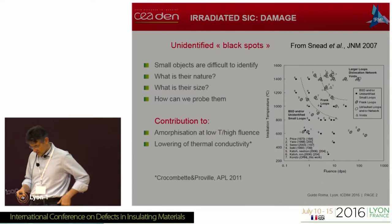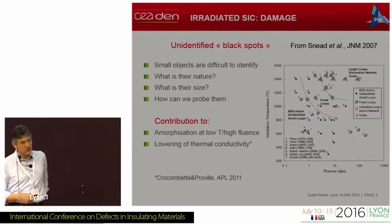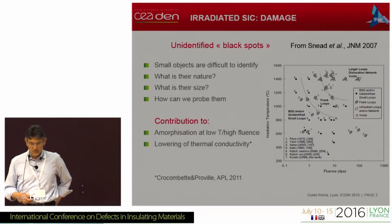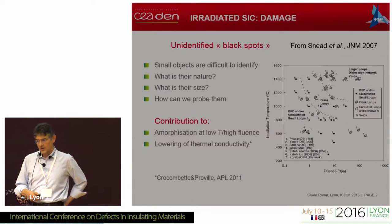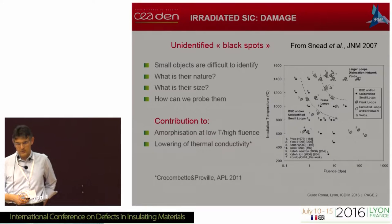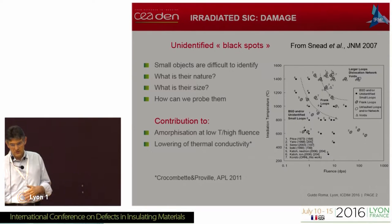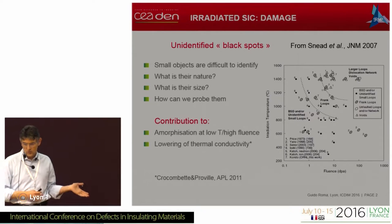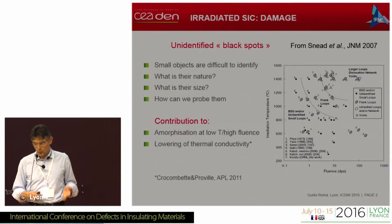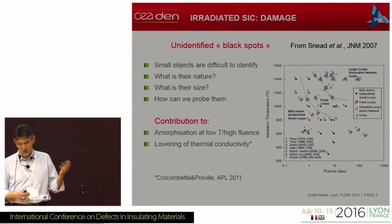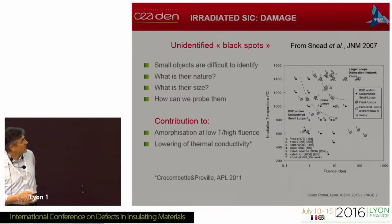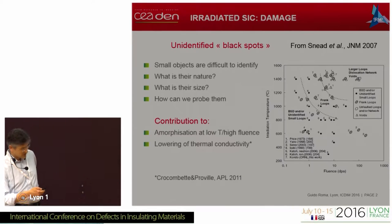The radiation damage in this material has been characterized in many ways, trying to understand what happens under different conditions of doses and temperatures of irradiation. Here is a summary from a Journal of Nuclear Materials paper, where people have tried to characterize damage as a function of temperature and fluence.